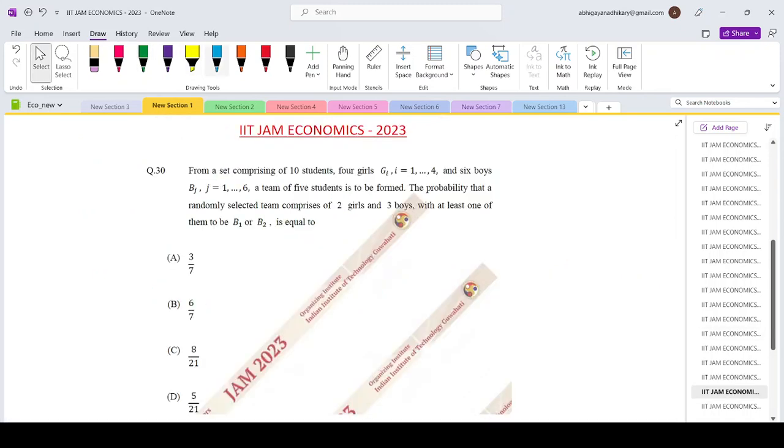Now let us come to question number 30 of the IIT JAM Economics 2023 paper. From a set comprising of 10 students, 4 girls and 6 boys, a team of 5 students is to be formed. The probability that a randomly selected team comprises of 2 girls and 3 boys with at least one of them be B1 or B2 is equal to how much?